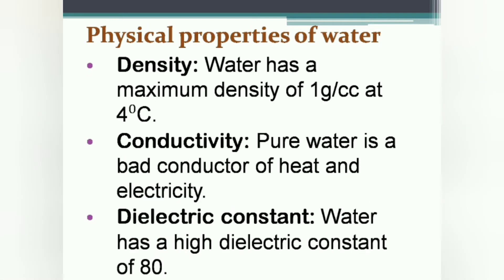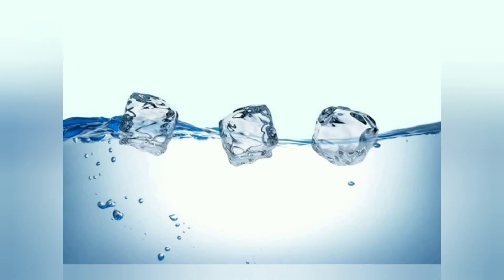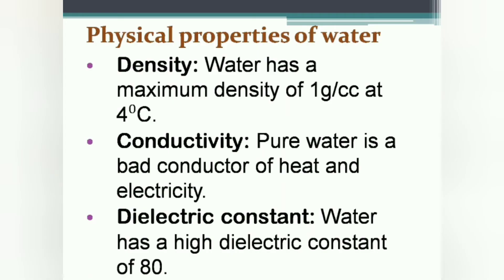If we talk about density, water behaves differently from other substances. Normally the density of substances in solid state is higher than in their liquid state. But water has a maximum density of 1 gram per cubic centimeter at 4 degrees Celsius, and ice has lower density than liquid water. Due to this reason, ice floats on water.